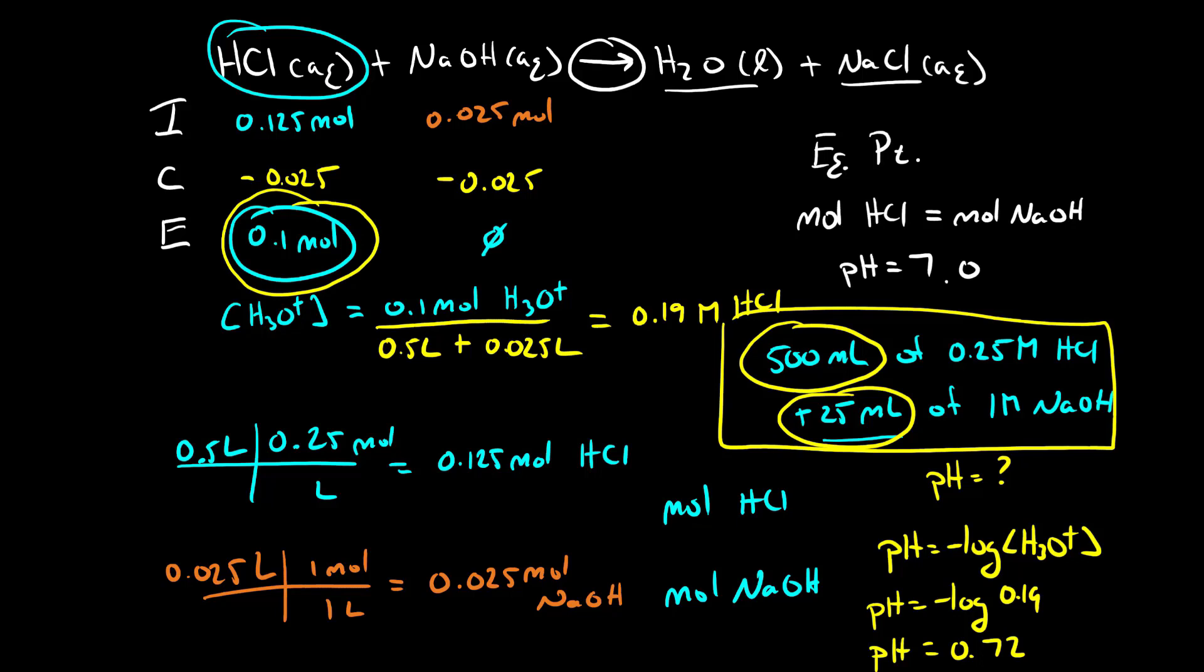Since it's a strong acid we know that gets completely converted to hydronium. So take those moles divided by the total volume to give you the concentration of hydrochloric acid which is equal to the concentration of hydronium. And then you can finish up by calculating the pH.